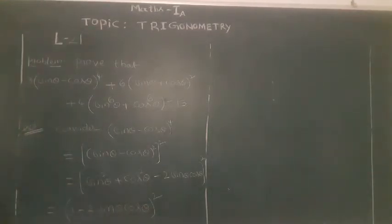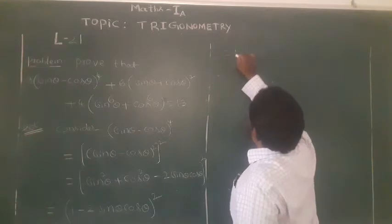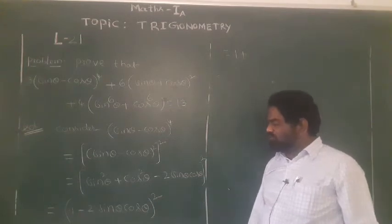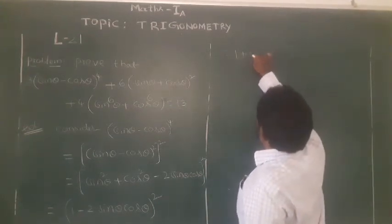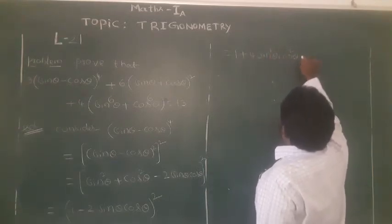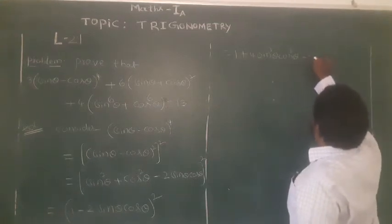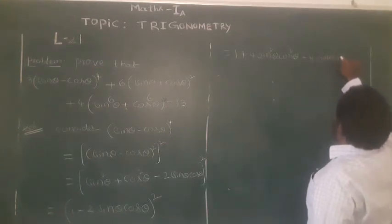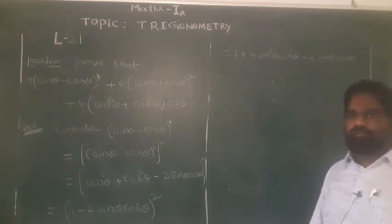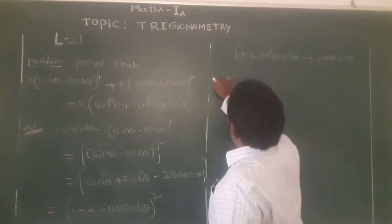Again expand it by (A - B)² formula: A² is 1² = 1, B² is (2sinθcosθ)² = 4sin²θcos²θ, minus 2AB gives minus 4sinθcosθ. So the value of (sinθ - cosθ)⁴ is 1 + 4sin²θcos²θ - 4sinθcosθ. Now this is the value of the first term. Consider the second term.